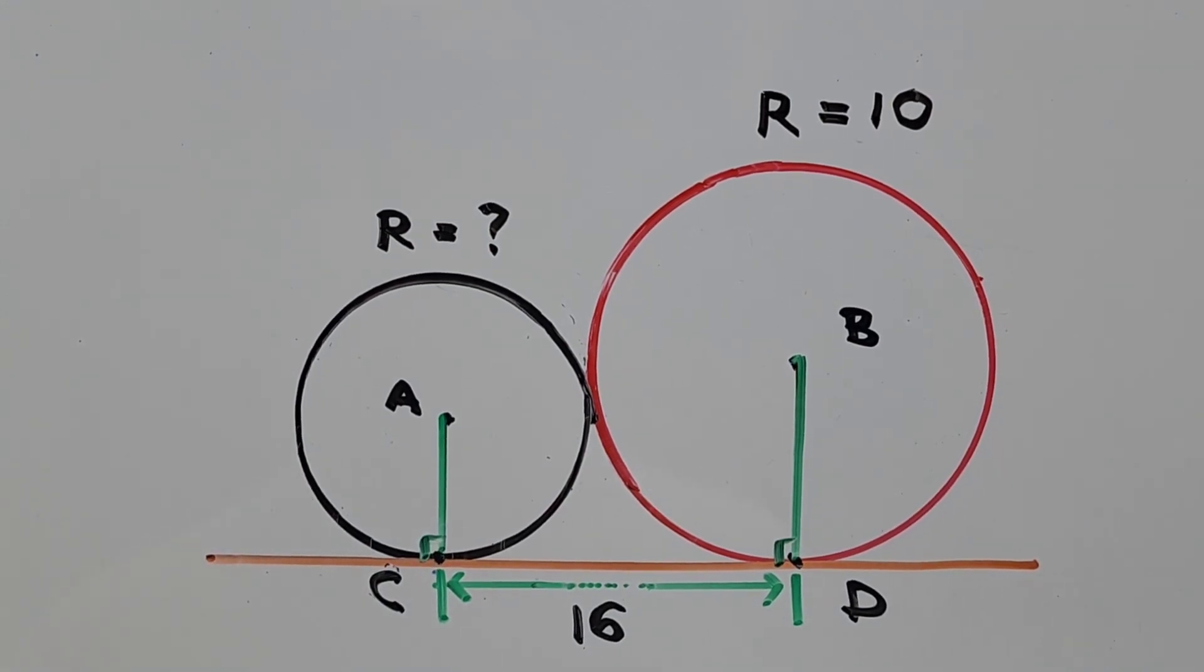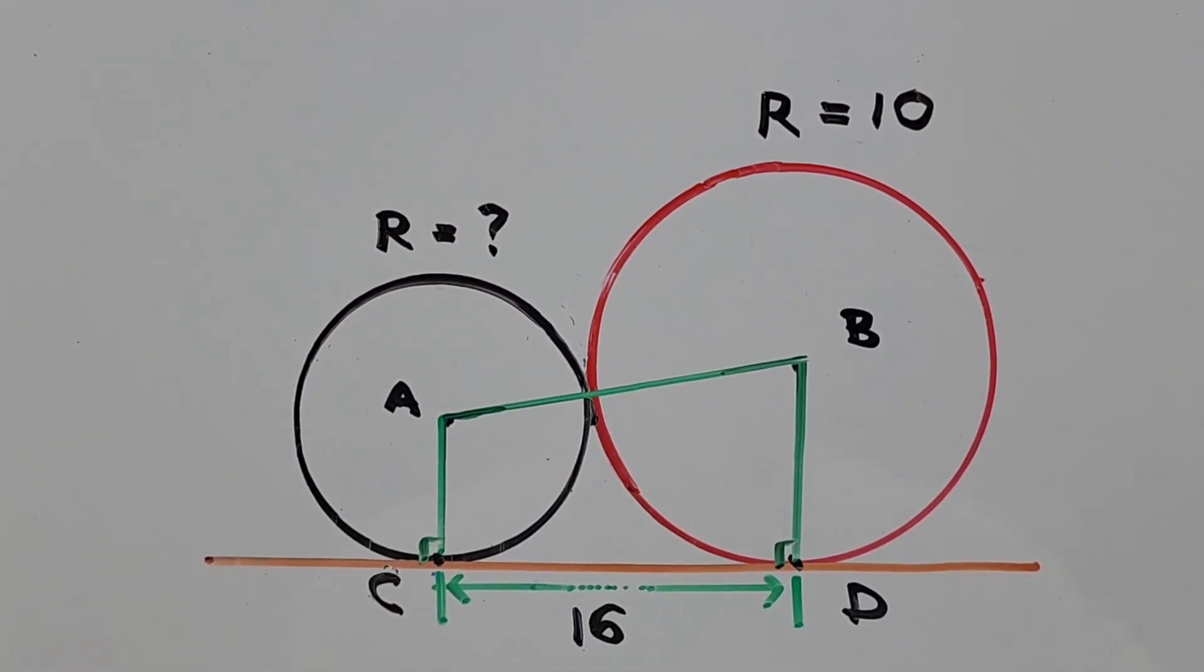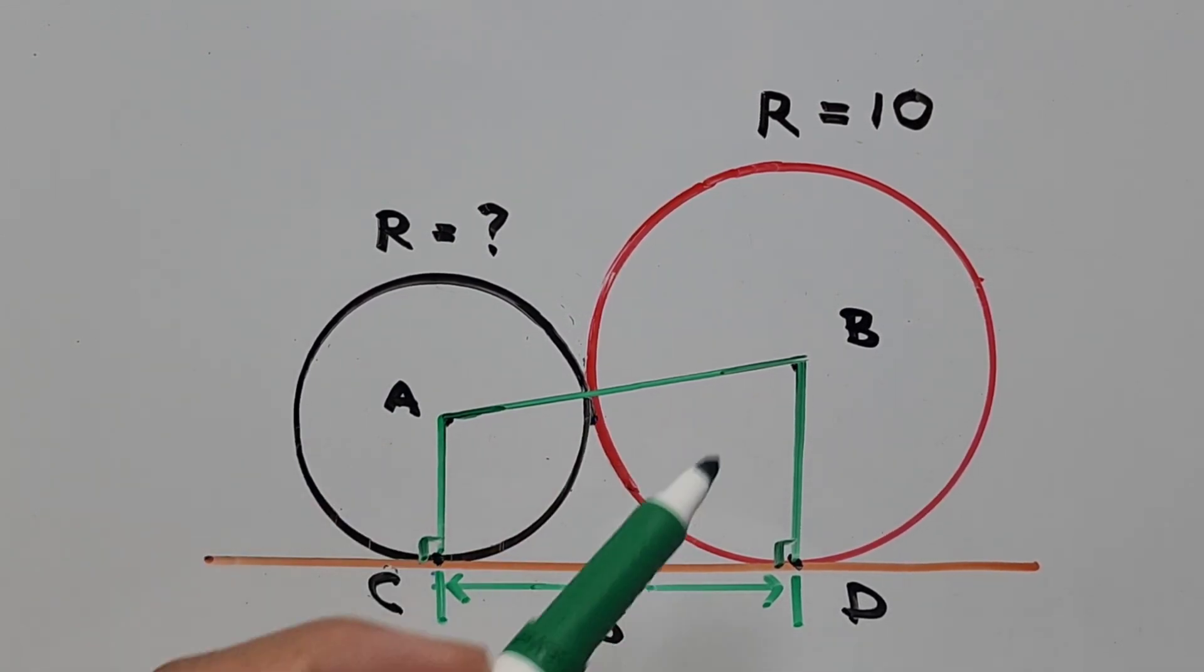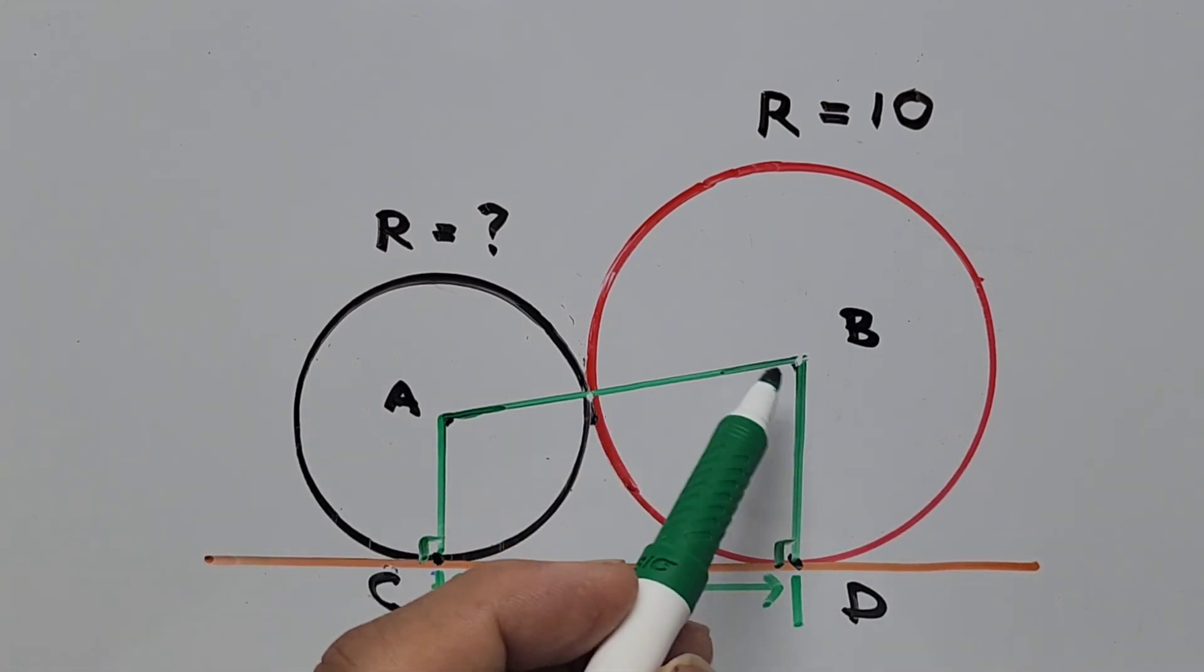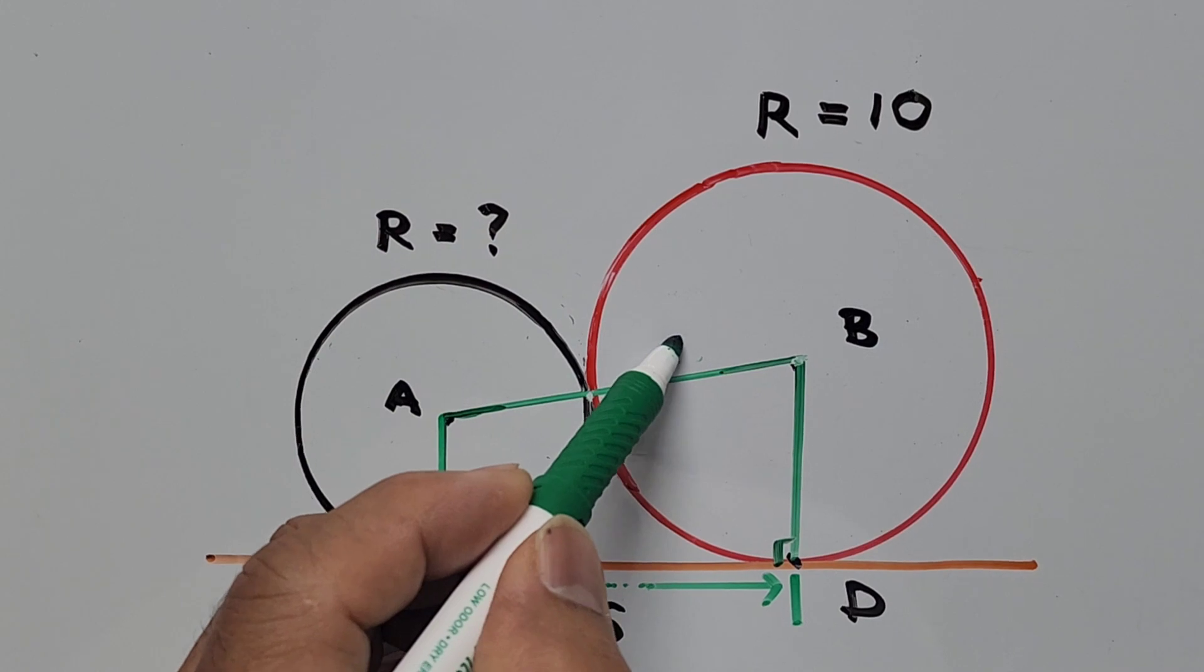Next we connect the centers of the circle through the point of tangency between the two circles. So now we have line segment AB, and this part right here to the point of tangency from the center of the bigger circle, that is 10 units.